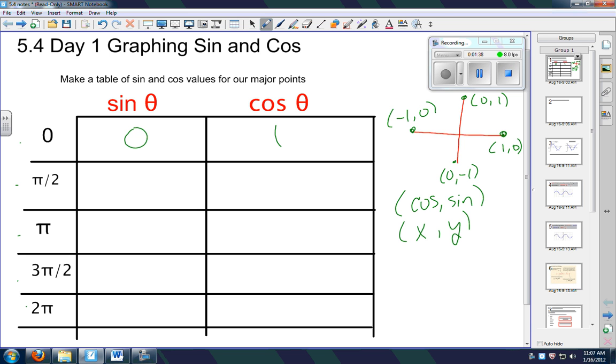Okay, so notice these are backwards. Here's the y, here's the x, just the way we made the table—no real reason to that. At π/2 we have a cosine of 0, sine of 1. Okay, you come over here to π, you get a cosine of -1, sine of 0.